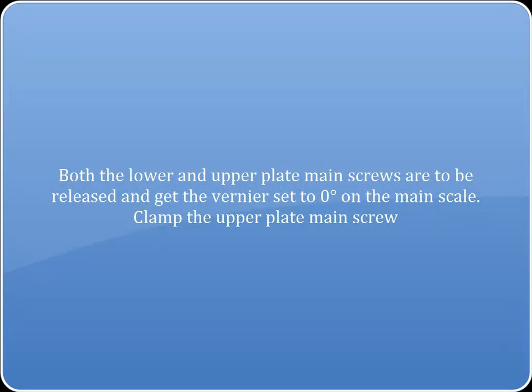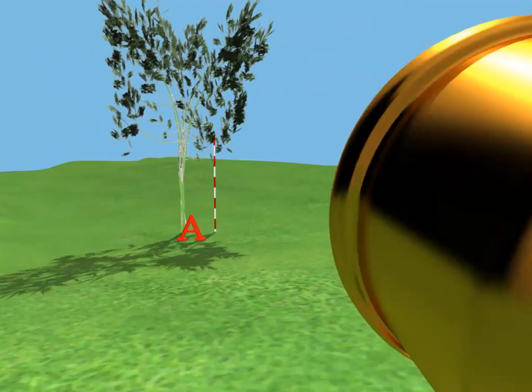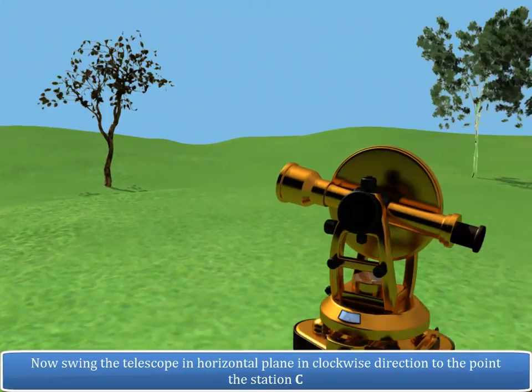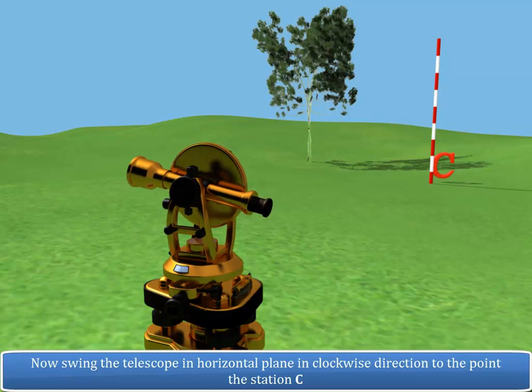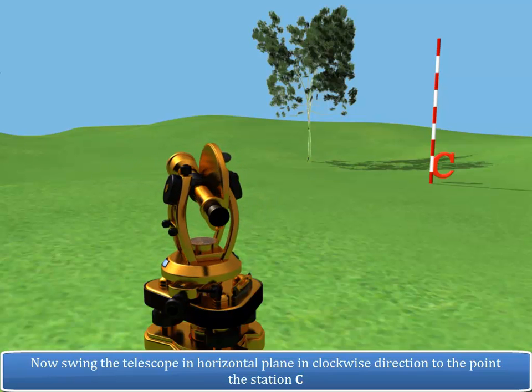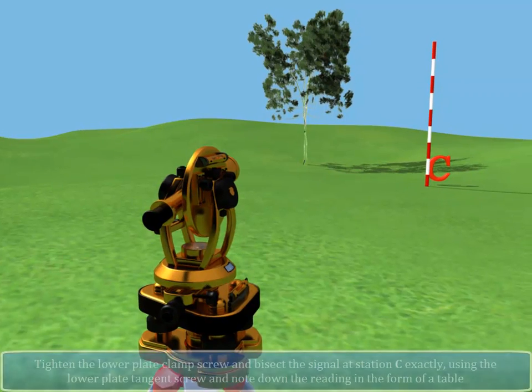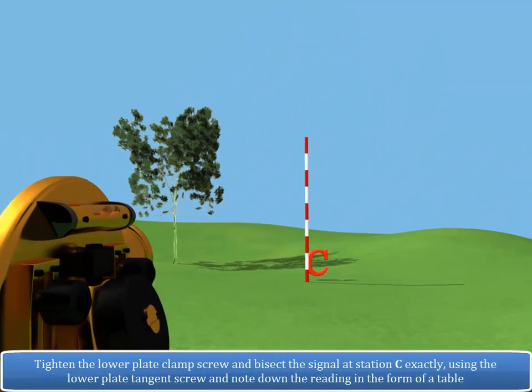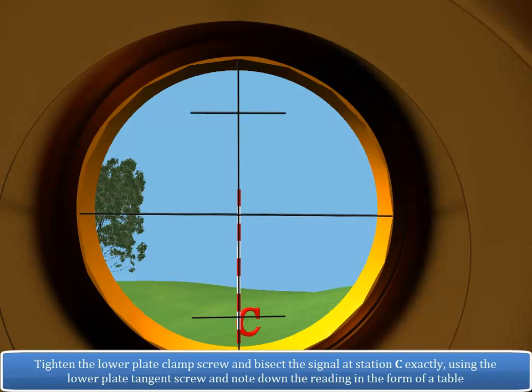Both the lower and upper plate main screws are to be released and get the vernier set to 0 degrees on the main scale. Now, swing the telescope in horizontal plane in clockwise direction to point the station C. Tighten the lower plate clamp screw and bisect the signal at station C exactly using the lower plate tangent screw and note down the reading in the form of a table.